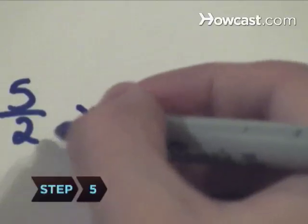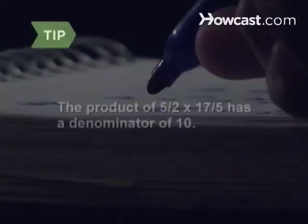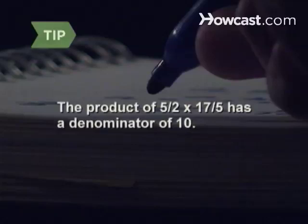Step 5: Multiply the denominators and write the product as the denominator of your solution. The product of 5 halves times 17 fifths will have a denominator of 10.